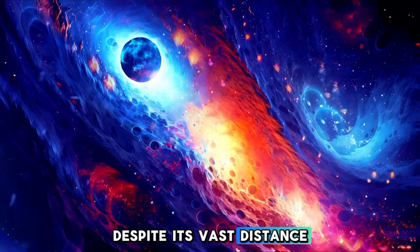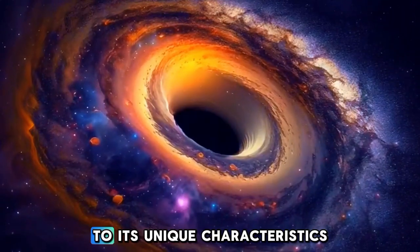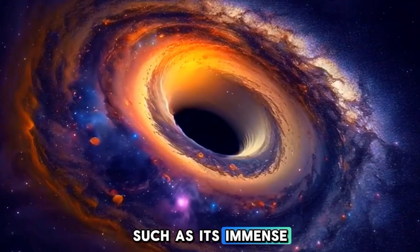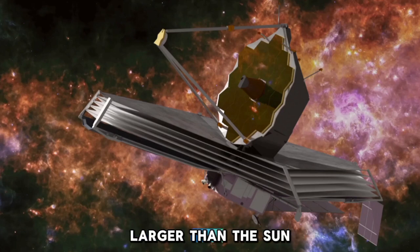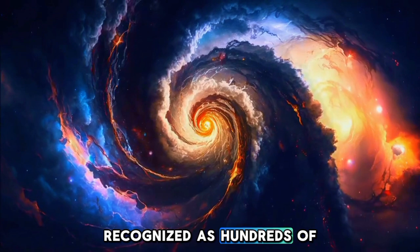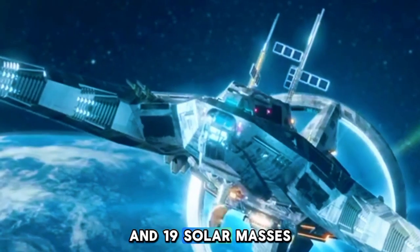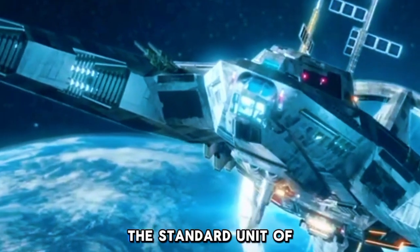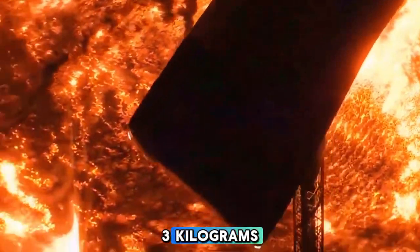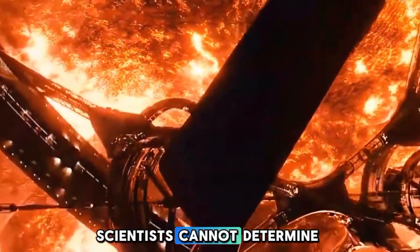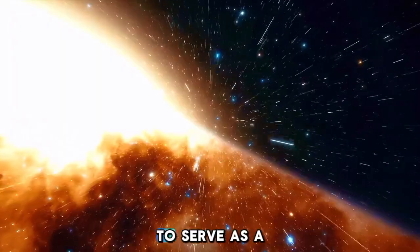Despite its vast distance, Betelgeuse shines brightly in our sky. Its brightness is due to its unique characteristics, such as its immense size and luminosity. Betelgeuse is approximately 1,000 times larger than the Sun, with a radius recognized as hundreds of times that of the Sun. Its mass is estimated to be between 12 and 19 solar masses. Scientists cannot determine Betelgeuse's precise mass because there are no planetary bodies orbiting it to serve as a comparison.